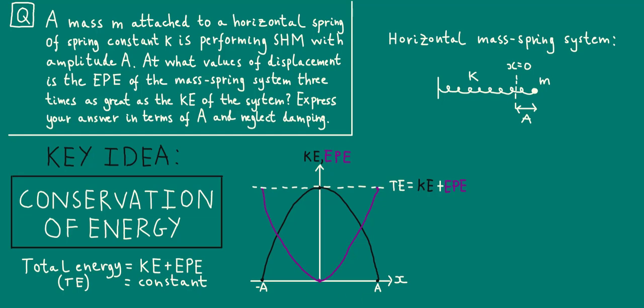Now, we're trying to figure out the displacements at which the EPE of the system is three times as big as the kinetic energy of the system. Now, looking at the graphs, we can see that there will be two displacements roughly here and here that fit the bill. To work out the values of these displacements, we of course need to examine the formulae for energy in SHM.